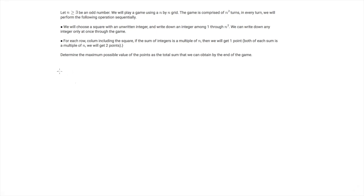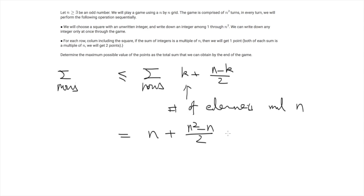Then now we can sum up all the rows and upper bound the number of points we get from the rows. This is the sum over all the rows, k plus n minus k over 2. If we remember what k is, k is the number of elements in this row which are divided by n, which are multiples of n. So if we sum up all the rows, these sum up to n, because from 1 to n squared, there are n numbers which are multiples of n. And for the other term, that immediately gives n squared minus n over 2. So the total number we get from the rows is upper bounded by n squared plus n over 2.